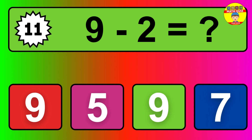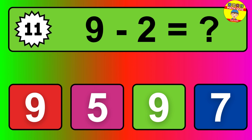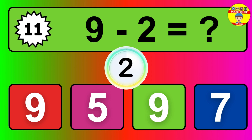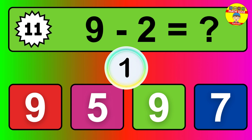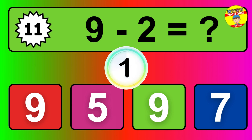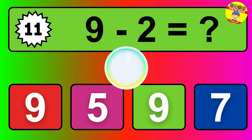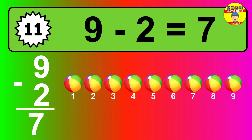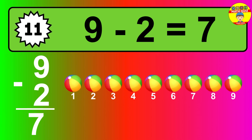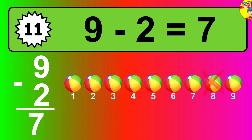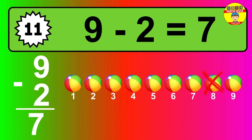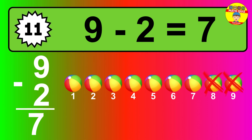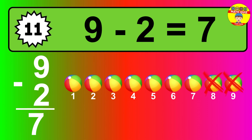Question 11. 9 minus 2 equals what? So the answer is 9 minus 2 is 7. Let's count it: 1, 2, 3, 4, 5, 6, 7.